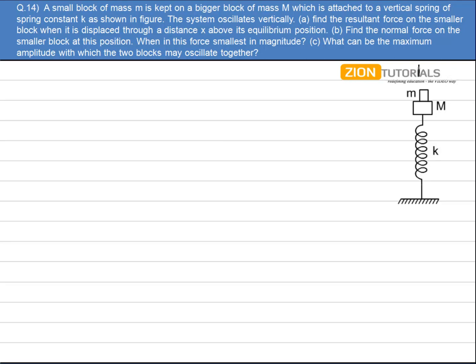So the particle is displaced x above its mean position. I can draw the free body diagram of mass small m at this very moment. That is mg is always downward and normal is upward.